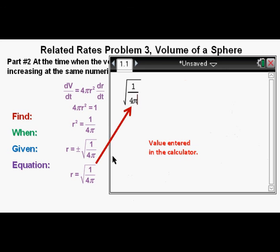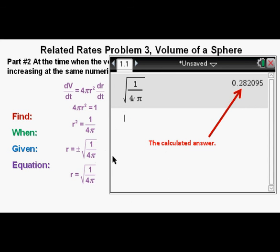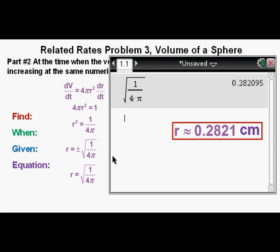And getting out our calculator again, we enter these values, press enter. And we get a radius equal to approximately 0.2821 centimeters, which we box in as our correct answer. That's about 3 millimeters, very small.